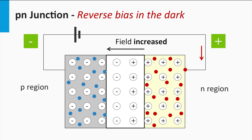If we apply a reverse bias on such a P-N junction in the dark, the depletion zone gets wider, the diffusion of majority charge carriers is suppressed, and only an extremely small current related to drift of minority charge carriers is generated.